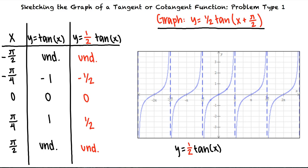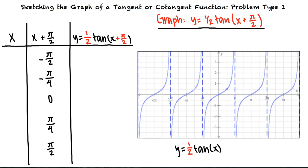We see that the angle is no longer x but x plus pi halves. So now our table will contain values that make the angle x plus pi halves equal to negative pi halves, negative pi fourths, zero, pi fourths, or pi halves.